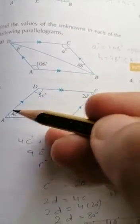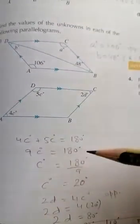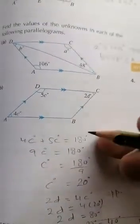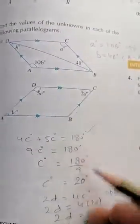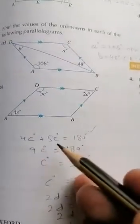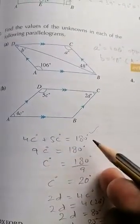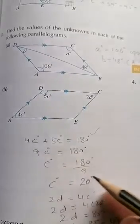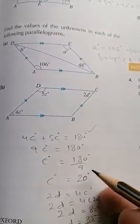I have formed an equation: 4C plus 5C equals 180 degrees. Then I simplified that to 9C equals 180, and by dividing, I got the value of angle C as 20 degrees.